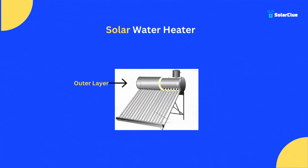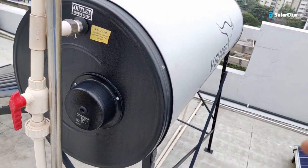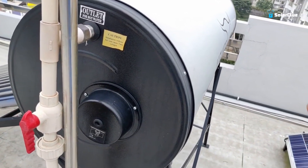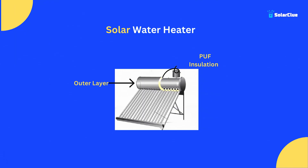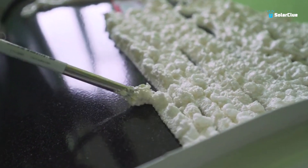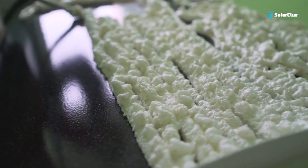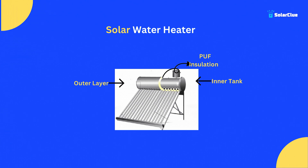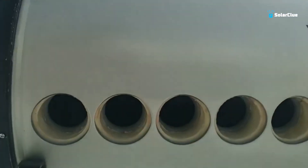The tank also has three layers: the outer tank, which you see from outside and protects the water heater from sun, rain, and the outer atmosphere; the middle layer, known as puff insulation, which keeps the water heated for up to 48 hours; and the inner tank. The outer tank and puff insulation are essentially the same across every company, so we don't need to focus on those factors.